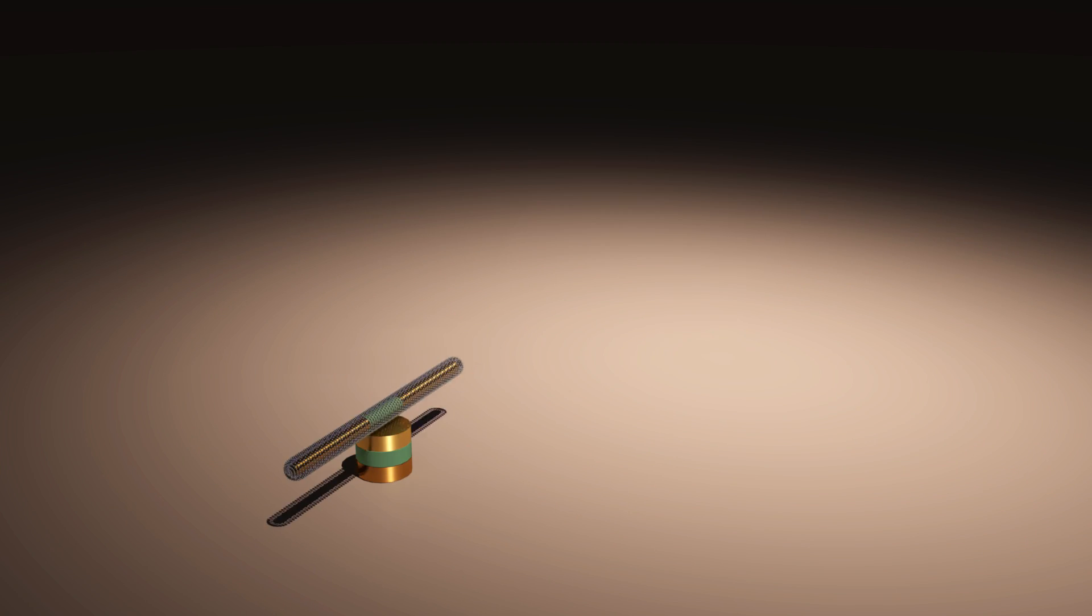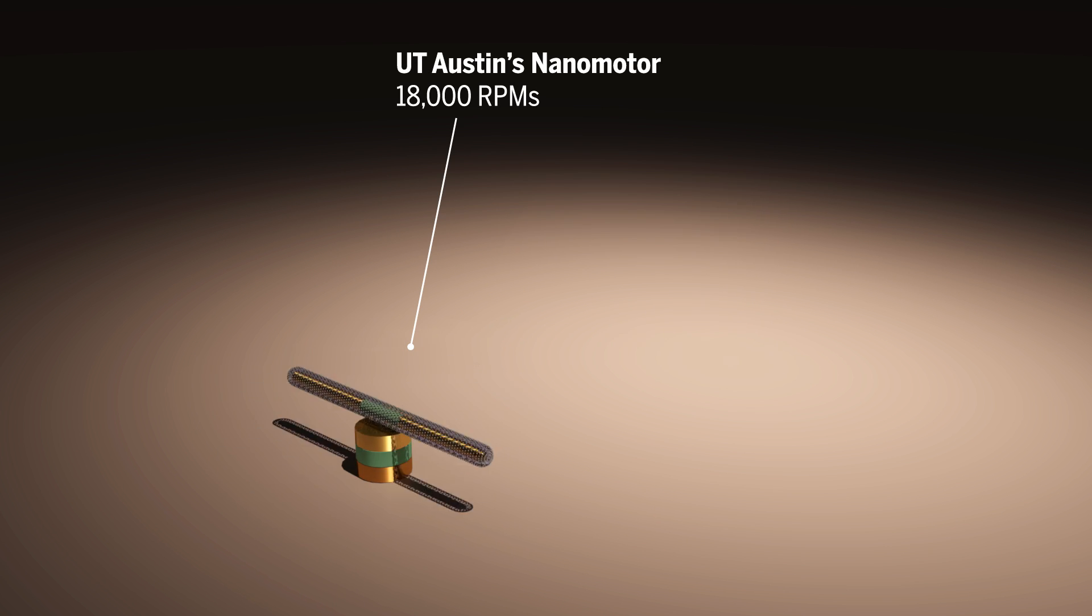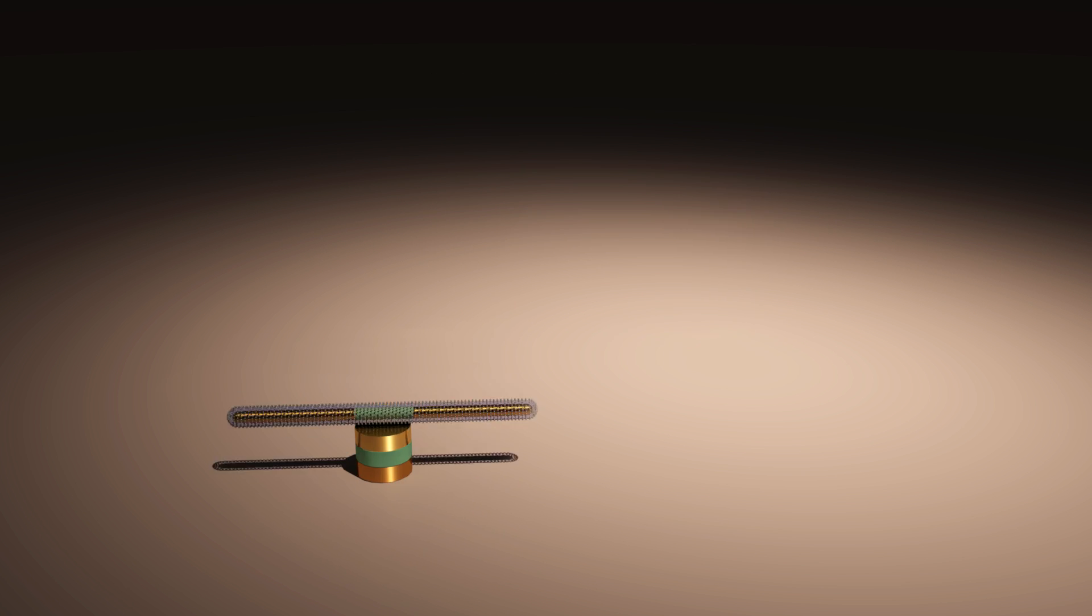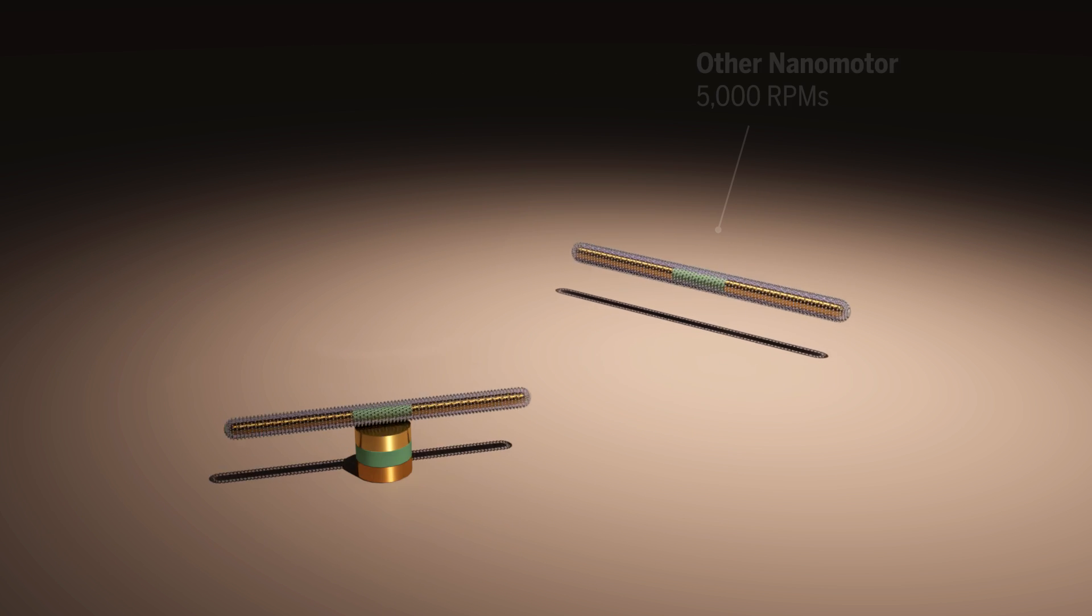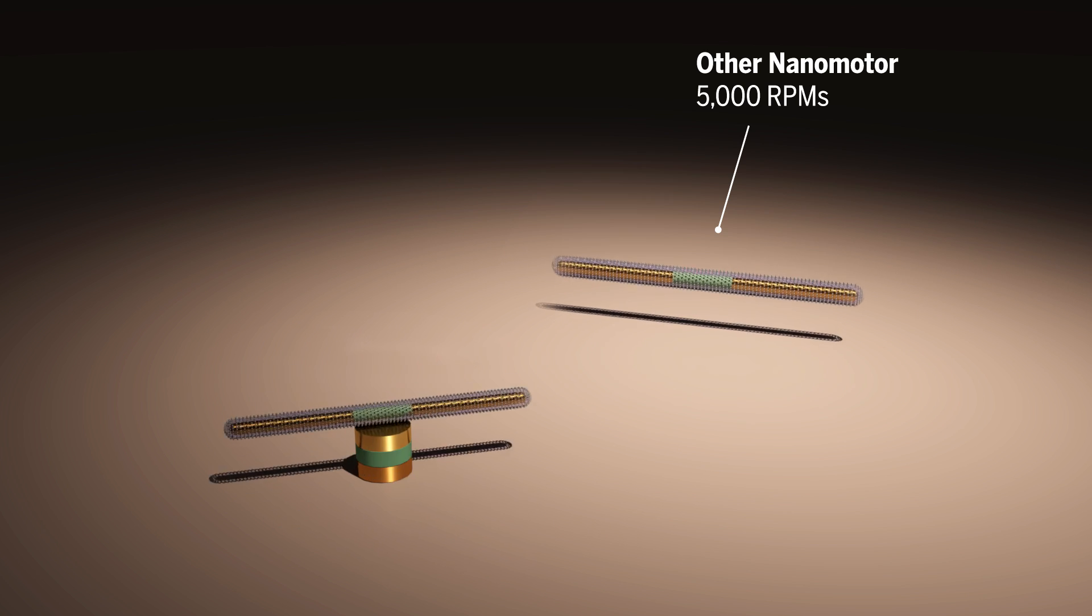The team succeeded in building the smallest, fastest, and longest-running nanomotor to date. The nanomotors rotate as fast as a jet engine at 18,000 RPMs. Just as impressive, they documented 15 hours of continuous spinning. Most other nanomotors have clocked in at less than a few minutes of rotation.